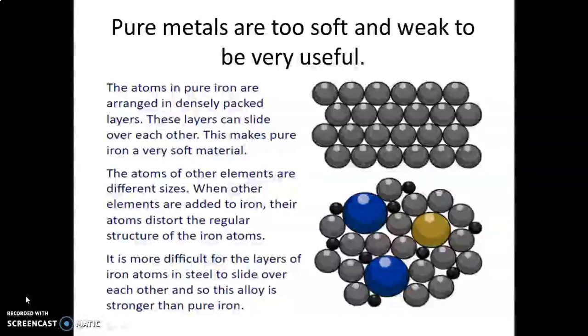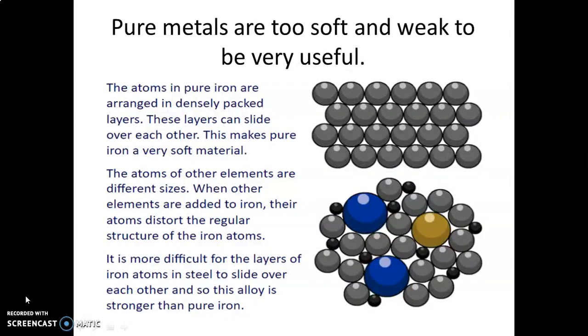Pure metals are weak and soft. They can be bent easily, they can be hammered into sheets, they can be drawn into wires. The reason is, the atoms in pure metals are arranged in regular layers. So when a force is applied, the layers slide over each other. This explains why metals are malleable and ductile.